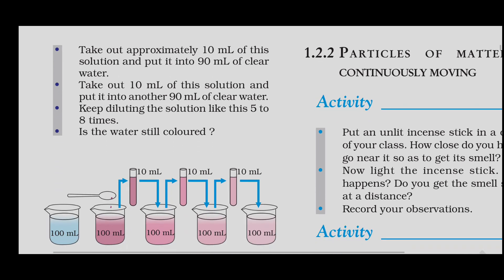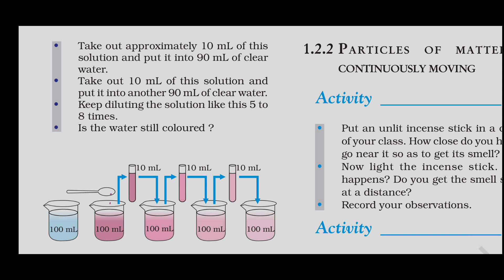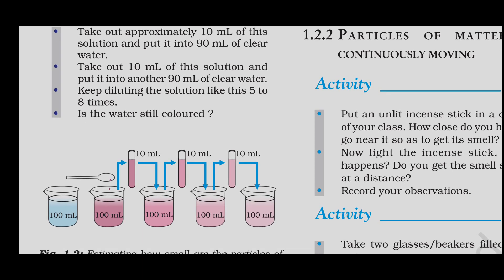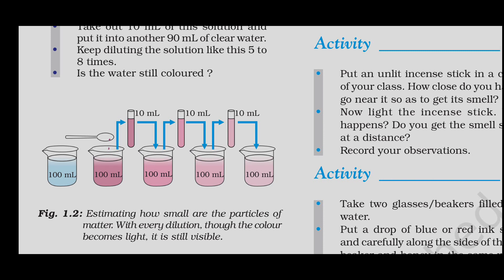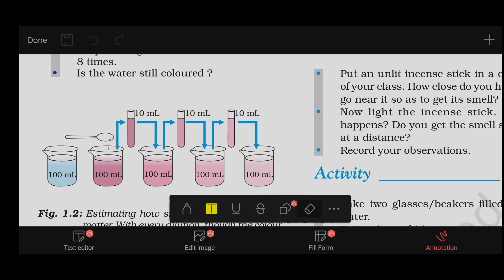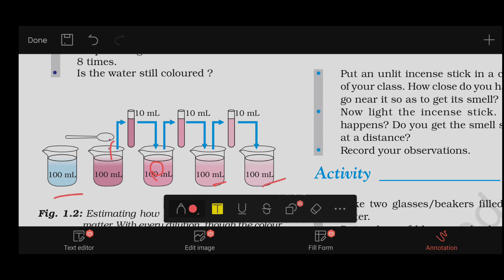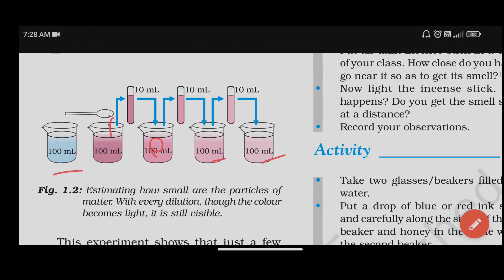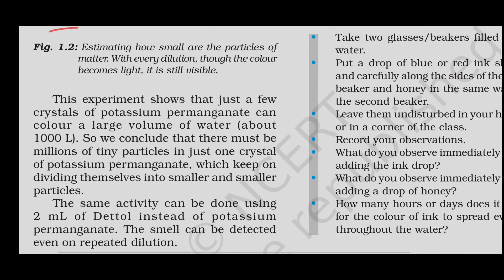Take 10 ml of this solution and add 90 ml of clear water. Repeat the dilution further. The experiment shows that just a few crystals of potassium permanganate can color a large volume of water.